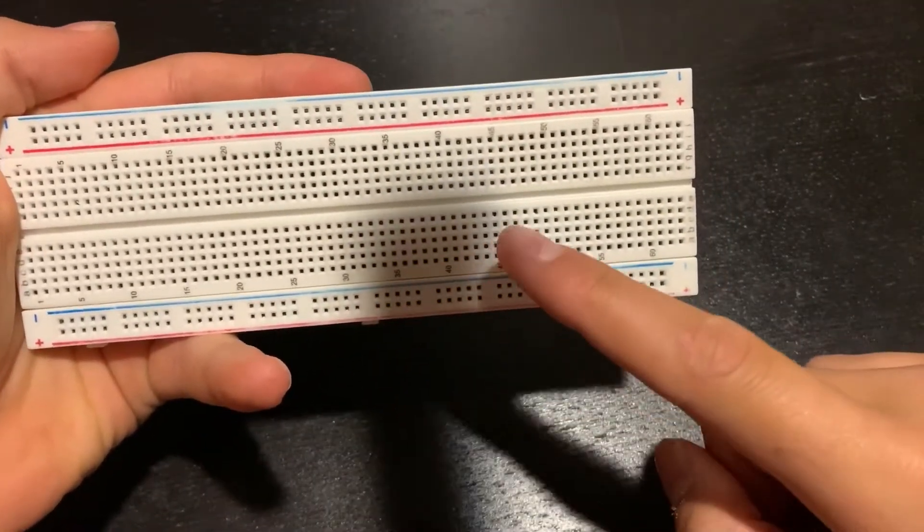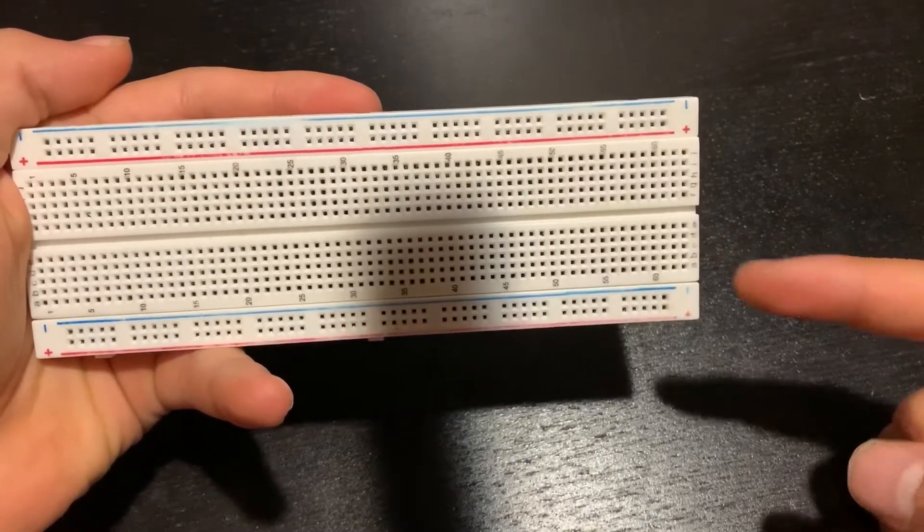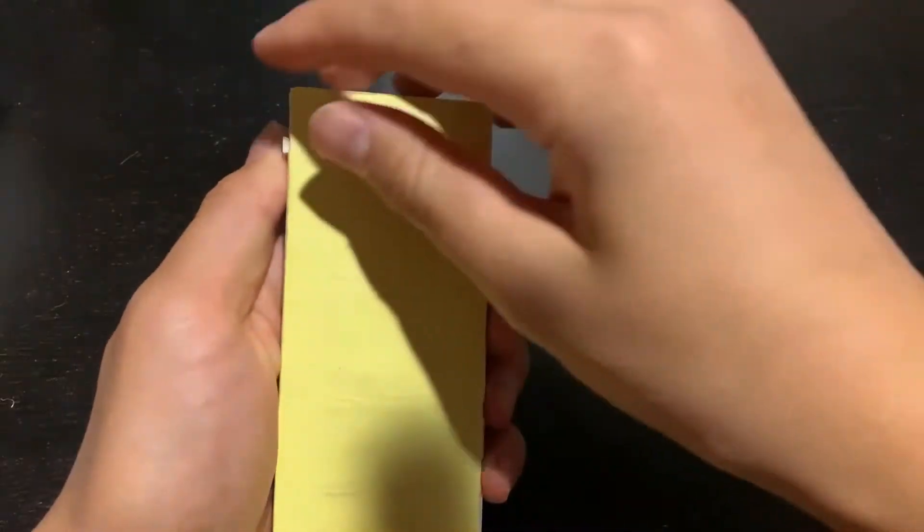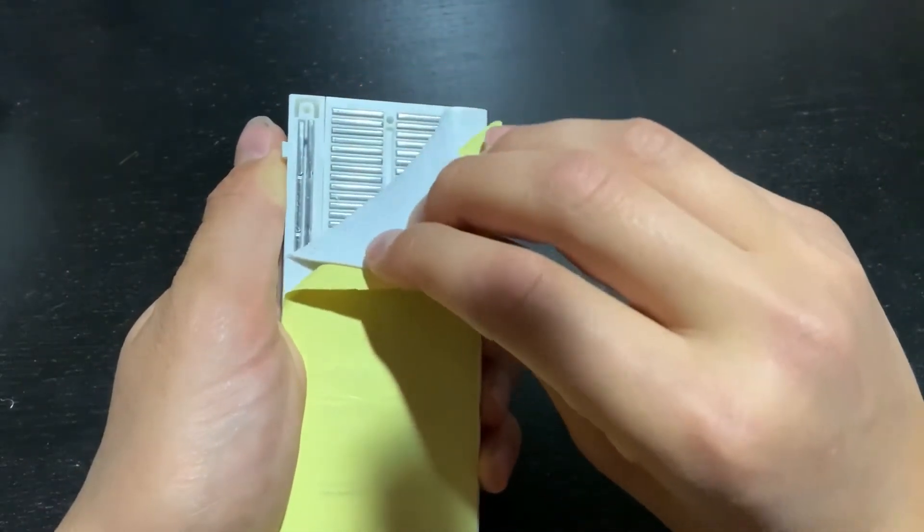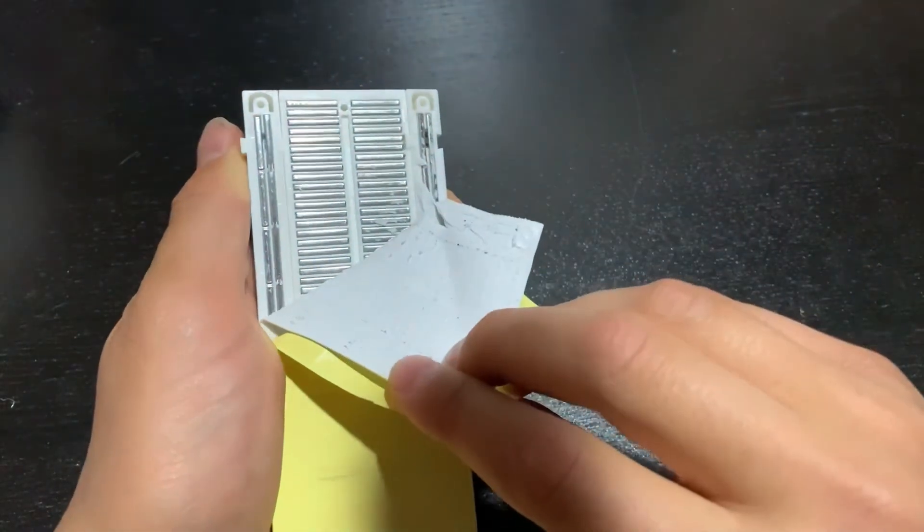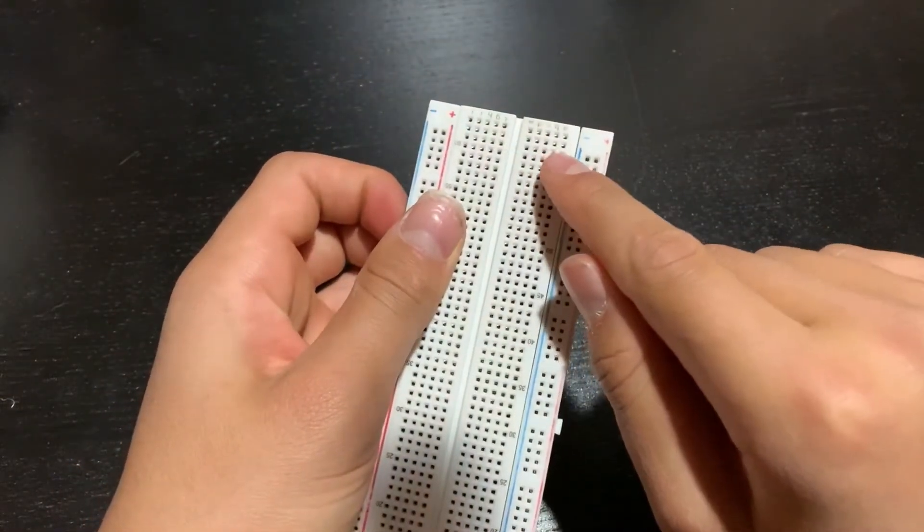Breadboards have a series of rails running across them that bridge and connect inputted wires. But what does that look like? As we take a look inside the breadboard, it becomes easier to see the rails. These metal rails run across the breadboard and attach wires that are inputted into the holes. But placement is crucial.